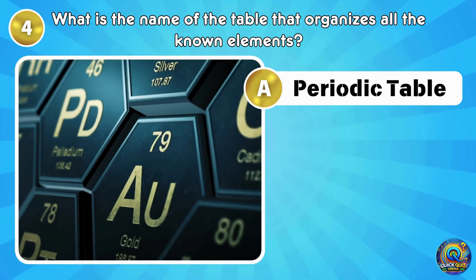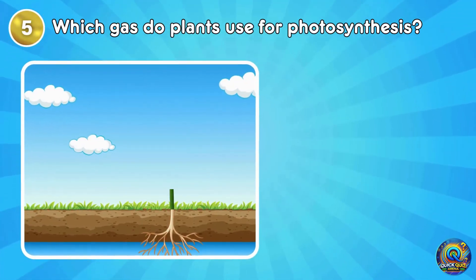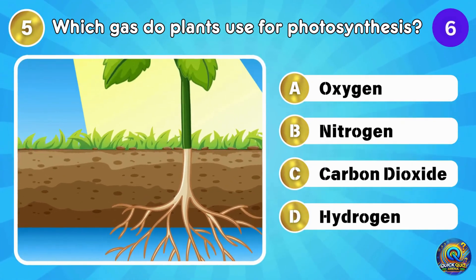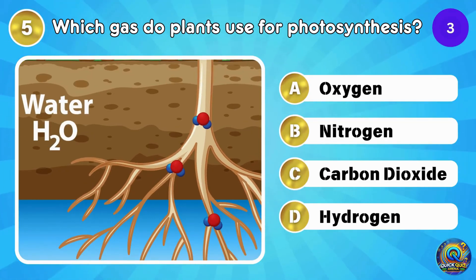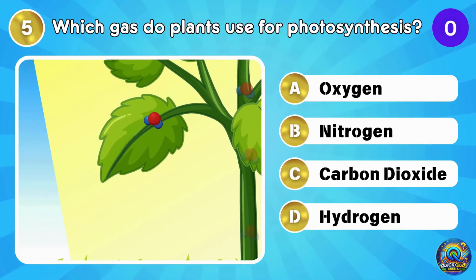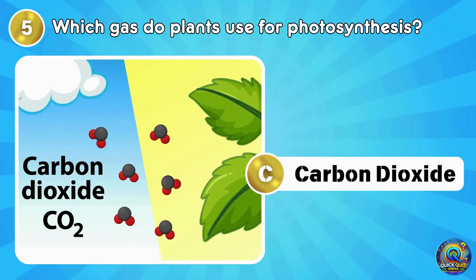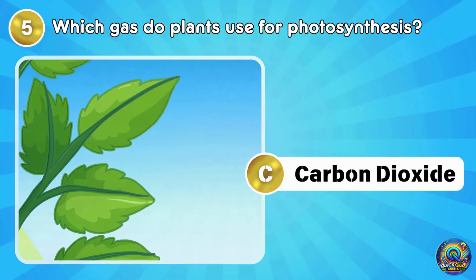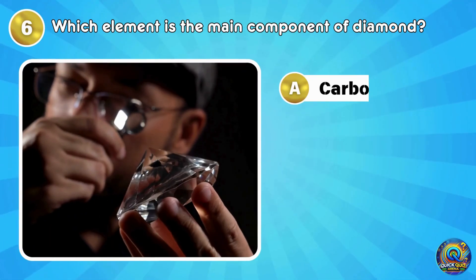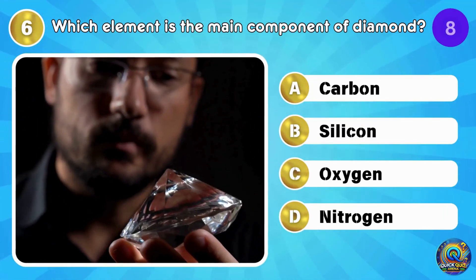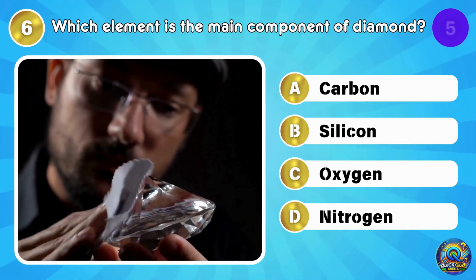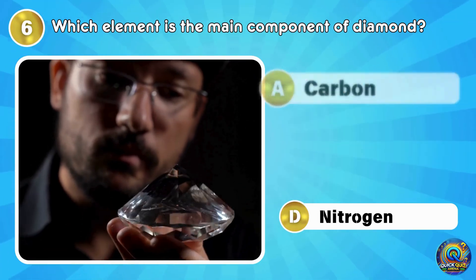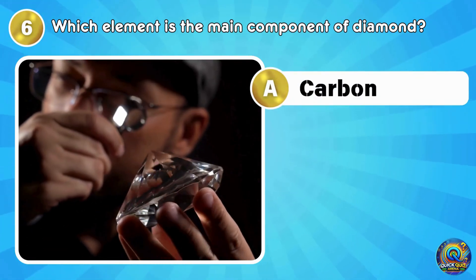Ready for more science fun? Let's go. Which gas do plants use for photosynthesis? The answer is carbon dioxide. Plants love it, and we love plants. Moving on to the next question: which element is the main component of diamond? The answer is carbon. Yes, your pencil and that diamond ring share something in common.